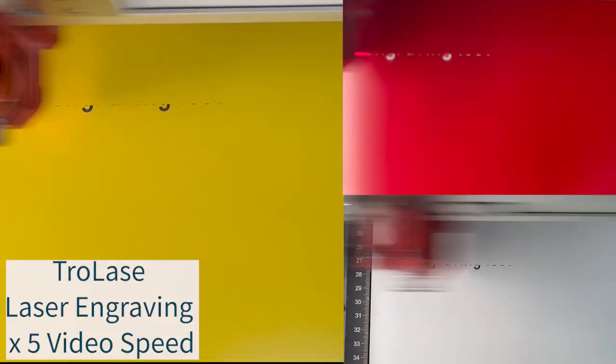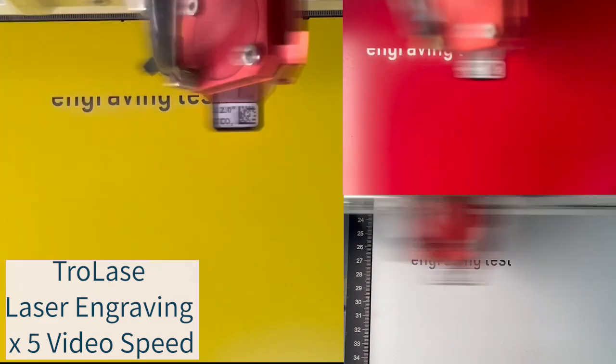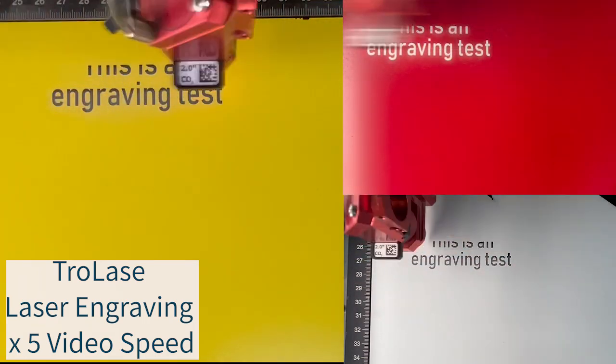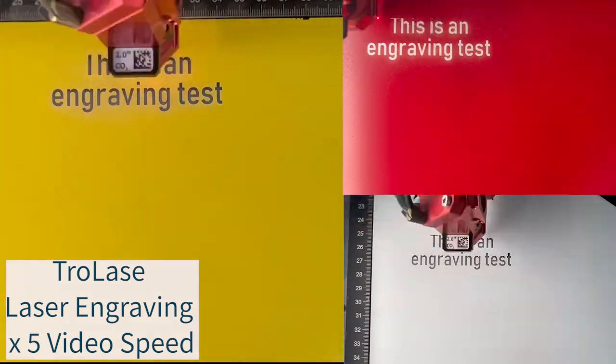You'll notice that when processing Trotec minimal residue and dust is created. This is thanks to the thin top layer which enables the creation of detailed engraving results even at high production speeds.